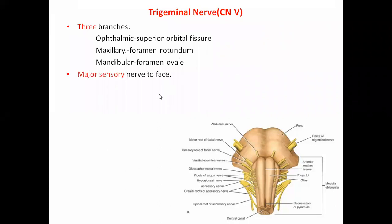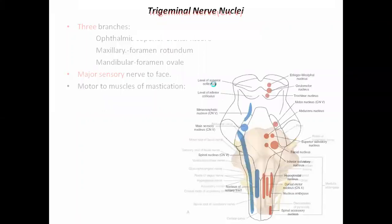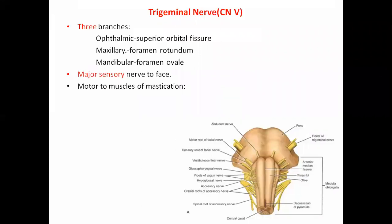The trigeminal nerve is the major sensory nerve to the face, head, and neck region. It is also motor to the muscles of mastication. Because it has both sensory and motor components, it is classified as a mixed cranial nerve.